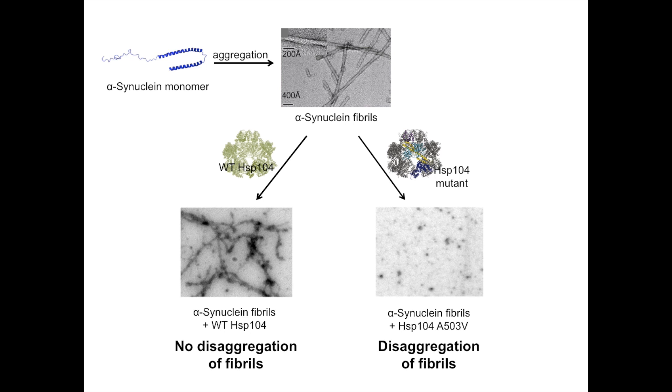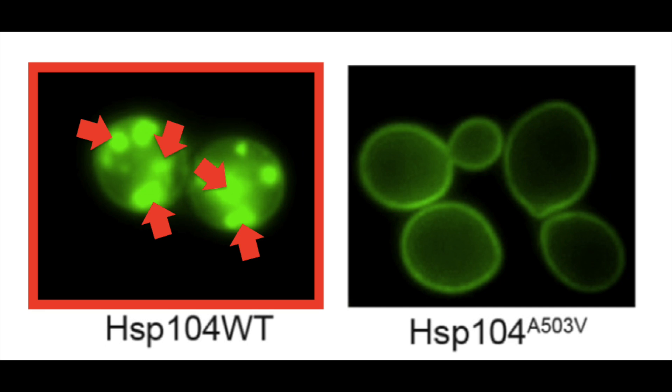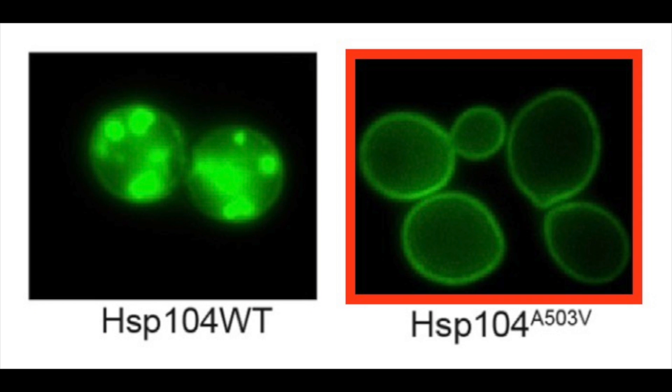These HSP-104 mutants were also determined to suppress alpha-synuclein aggregation and cell mislocalization in yeast. Although alpha-synuclein is normally found in the plasma membrane in yeast, cells expressing alpha-synuclein and wild-type HSP-104 contain alpha-synuclein aggregates that are localized to the cytoplasm. However, in the presence of the HSP-104-A503V mutant, alpha-synuclein remained correctly localized to the plasma membrane.